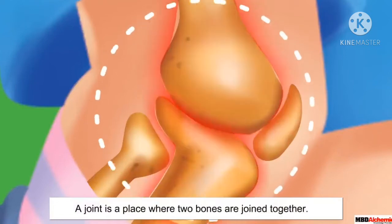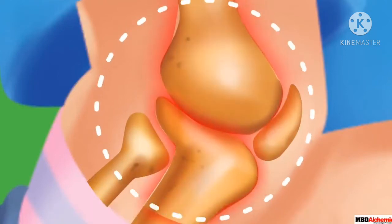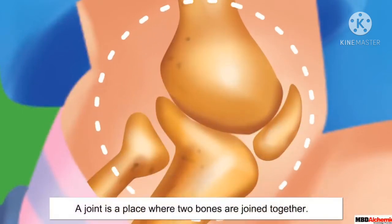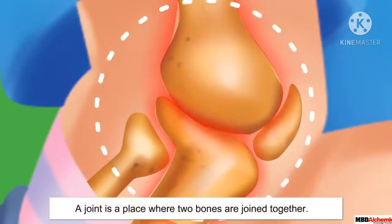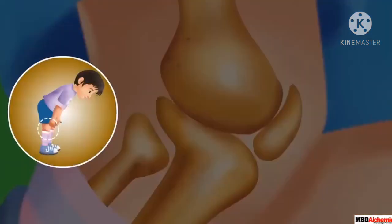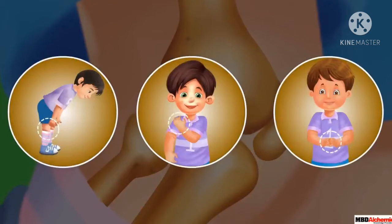Children, what is actually joined at the joints? That is, bones. Two bones are joined at the joints. Now press your finger against your body. You can feel some hard structure pressing against your finger. These hard structures are the bones.